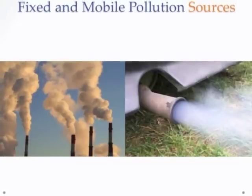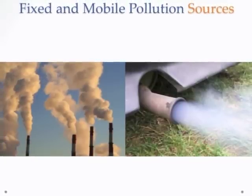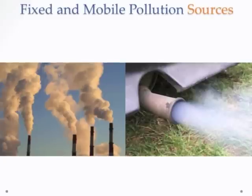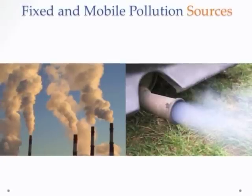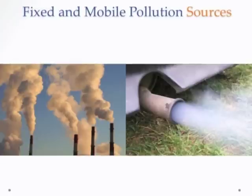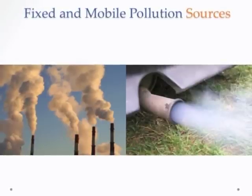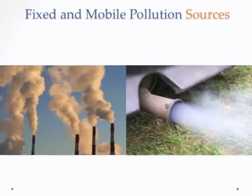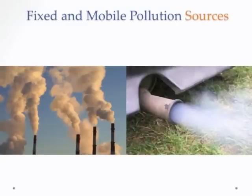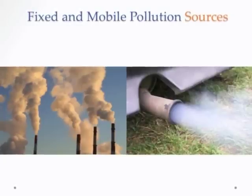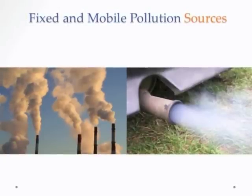Sources of air pollution can be classified as either fixed — for example, factories or power plants — and mobile, such as automobiles, trucks, and other transportation sources. We'll be looking in this presentation at mobile sources of pollution, and this will be mostly cars and light trucks.